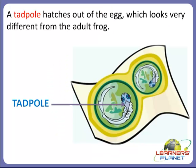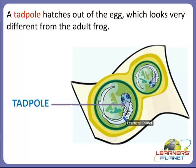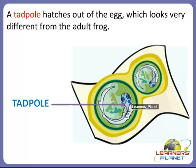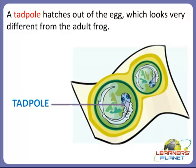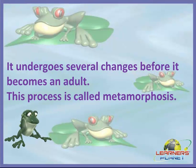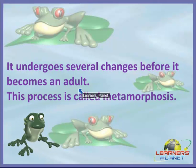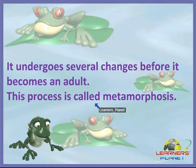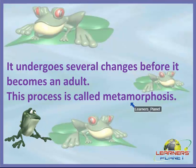A tadpole hatches out of the egg, which looks very different from the adult frog. Here you can see this is the egg of a frog in which a tadpole is present. This is the tadpole which hatches out of the egg. A frog undergoes several changes before it becomes an adult, and this process is called metamorphosis.